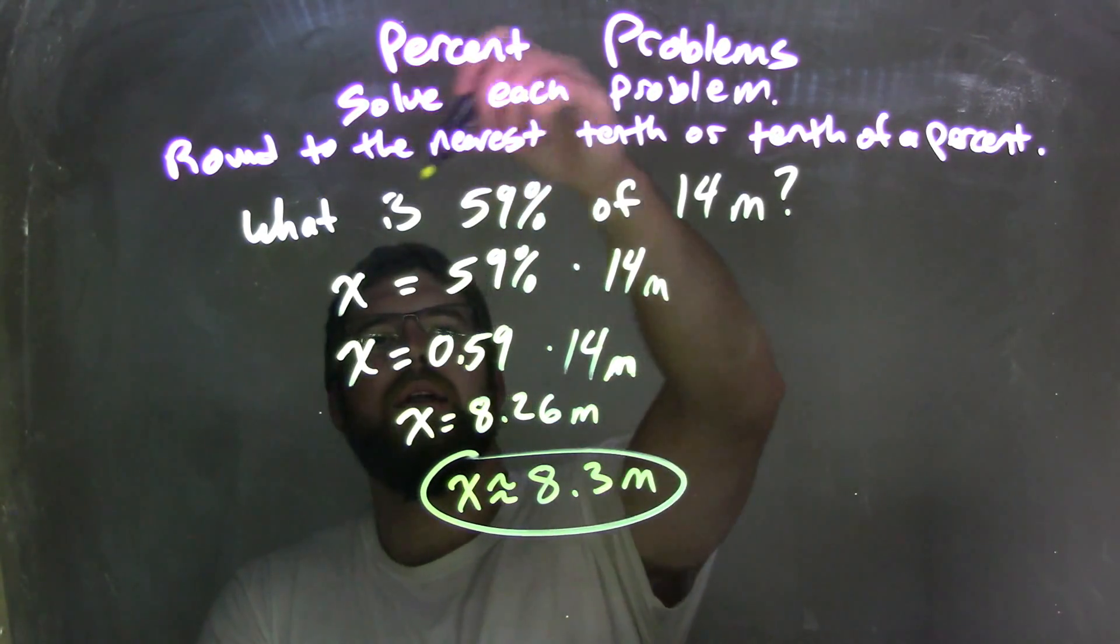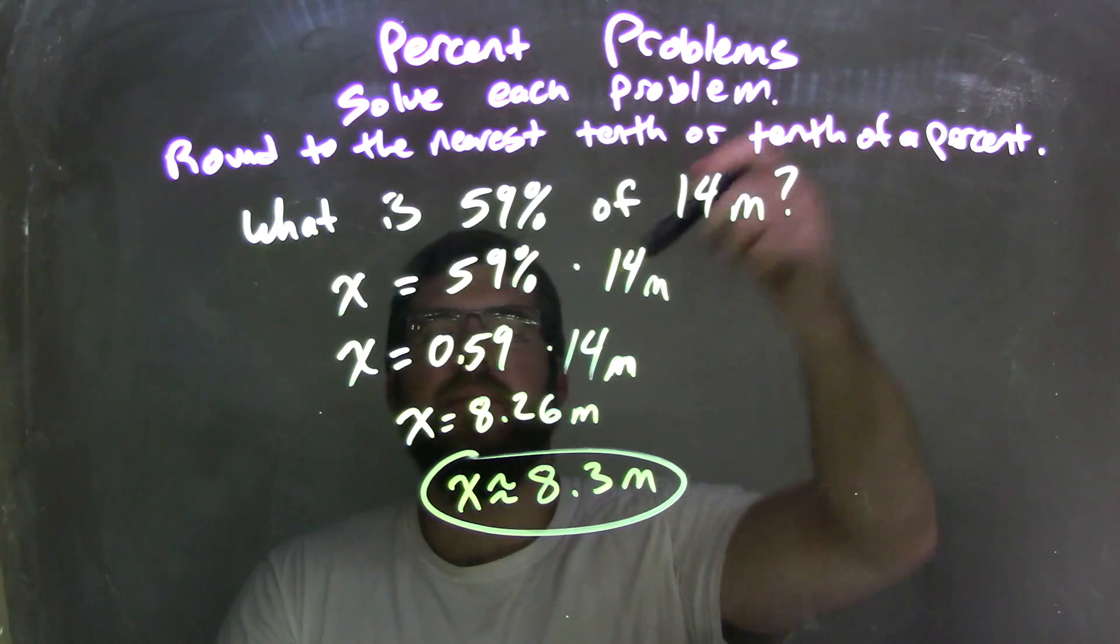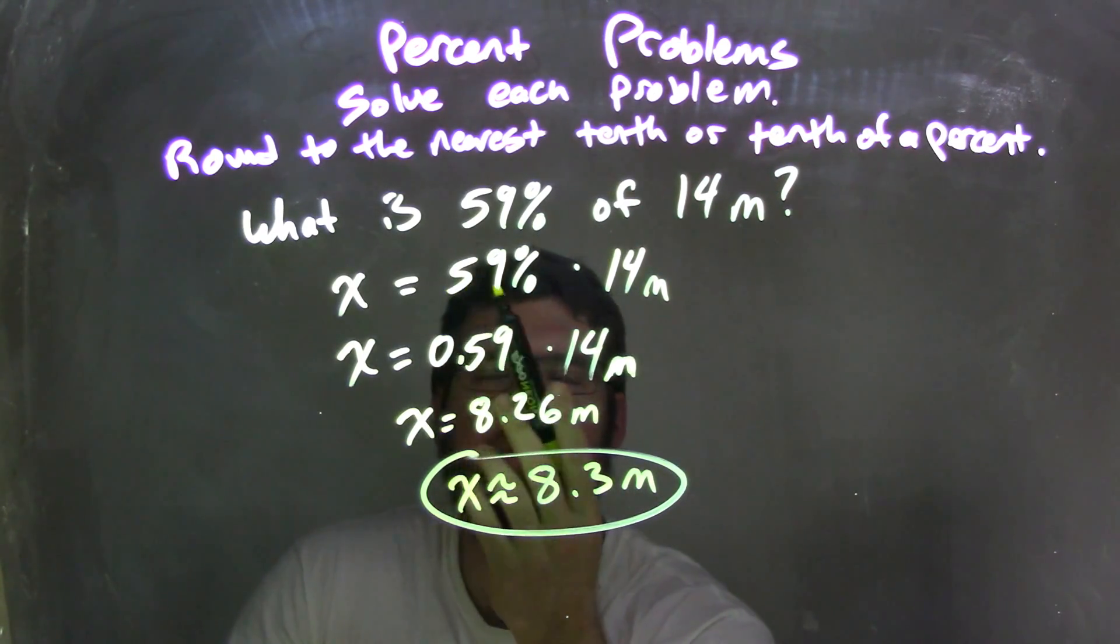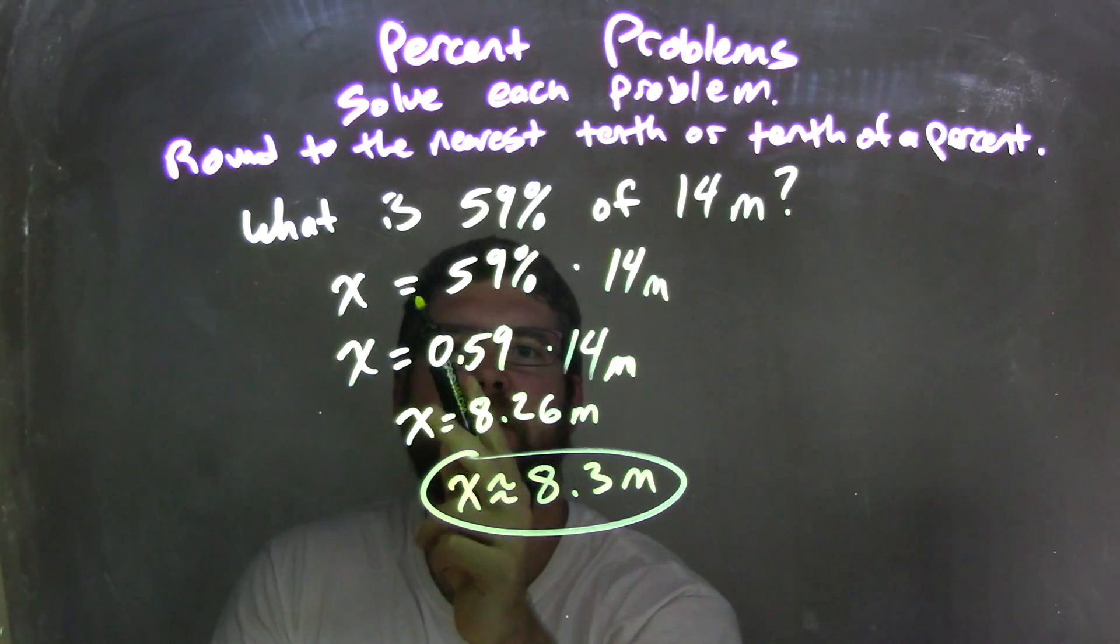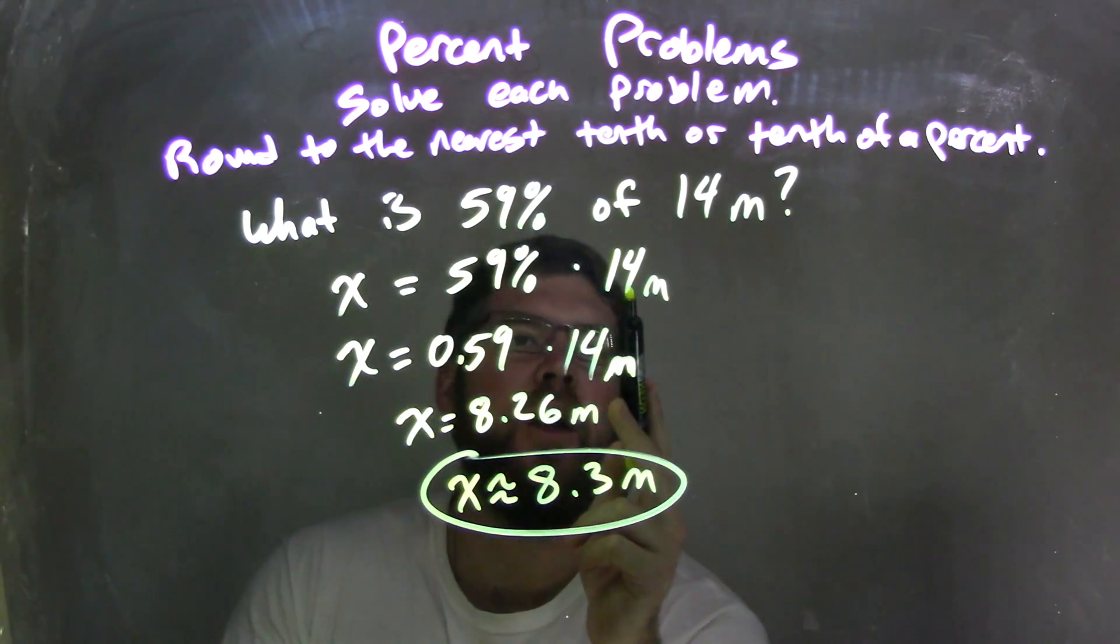Let's recap. We're given a question: what is 59% of 14 meters? I then wrote this into an equation—x equals 59%, which is 59% of, multiplication, 14 meters.